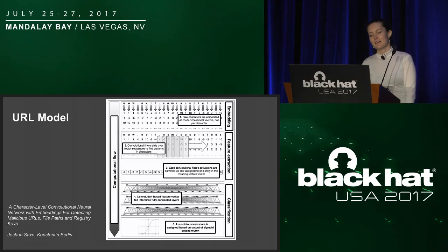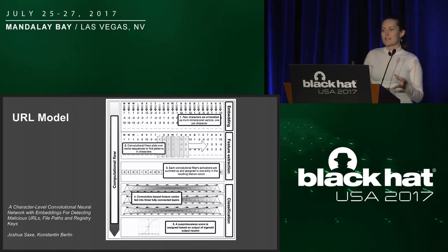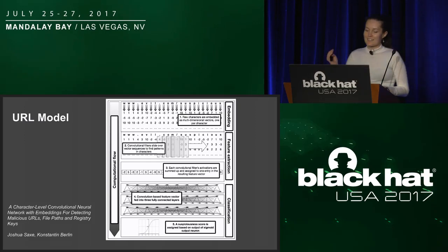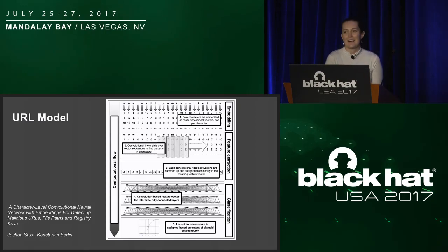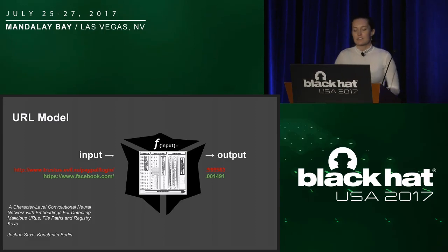The model used: we used a convolutional neural net developed at Sophos to classify short strings. This model takes in a raw character string, applies a learned embedding to each character — transforming each character into a multi-dimensional vector. Convolutional filters are applied, these are summed up and pushed through a couple of fully connected layers, then aggregated via a sigmoid output neuron to give a final score indicating if our URL is benign or malicious. If none of that made sense, we can just treat this as a black box — input, function, output.